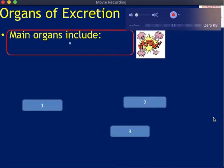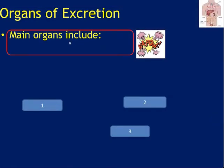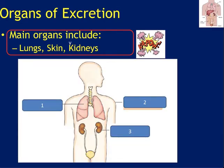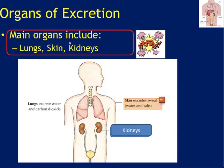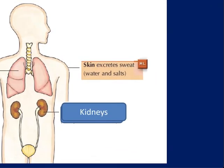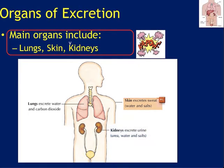That just gave you a brief introduction. When we look at the organs of excretion, your urinary system and kidneys are part of that, but our main organs are our lungs, our skin, and our kidneys. Lungs remove water and carbon dioxide. Skin removes water and salt. Kidneys remove urea, salts, and water. You need to know each product of excretion for each organ.